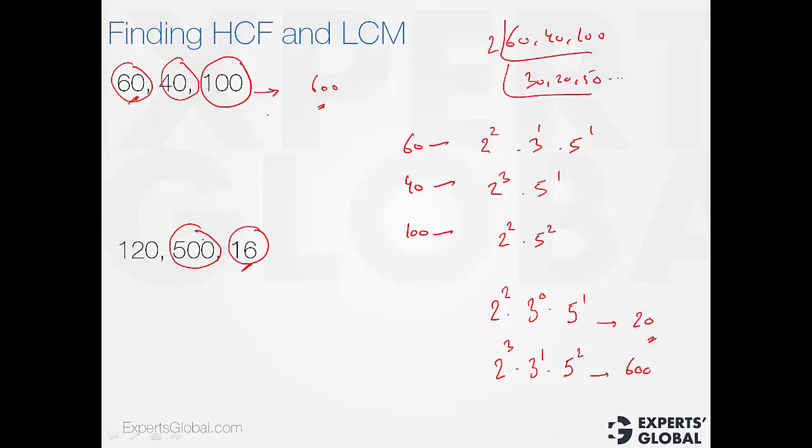So, now, 120, what new does it have that 2000 doesn't? It has 3 in it. So, now, the LCM is going to be 2000 into 3, 6000.